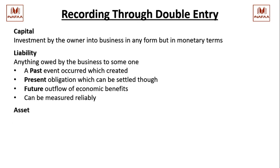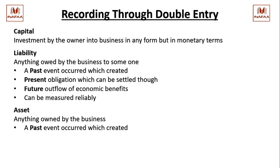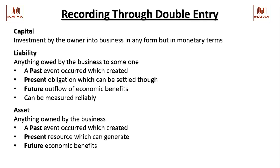Moving on to asset. The simplest definition is anything owned by the business. But the comprehensive definition, just like liability: a past event occurred which created a present resource. For liability it was a present obligation; for an asset it is a present resource - something from which we can achieve benefits, which can generate future economic benefits. The resource must be such that it can generate a future benefit. And the fourth condition: it can be measured reliably. Same four conditions: past, present, future, and reliable.